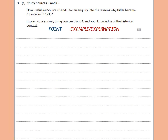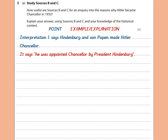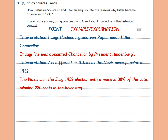Now let's look at what not to do. A weaker answer might say: Interpretation one says Hindenburg and von Papen made Hitler chancellor — it says he was appointed chancellor by President Hindenburg. Interpretation two is different as it tells us the Nazis were popular in 1932. The Nazis won the July 1932 election with a massive 38% of the vote, winning 230 seats in the Reichstag. This gets some credit for identifying the difference, but it's an undeveloped quote — you need to go further. Adding irrelevant own knowledge about the same topic doesn't describe or explain the difference between the interpretations. You need to be describing and explaining what the difference actually is.